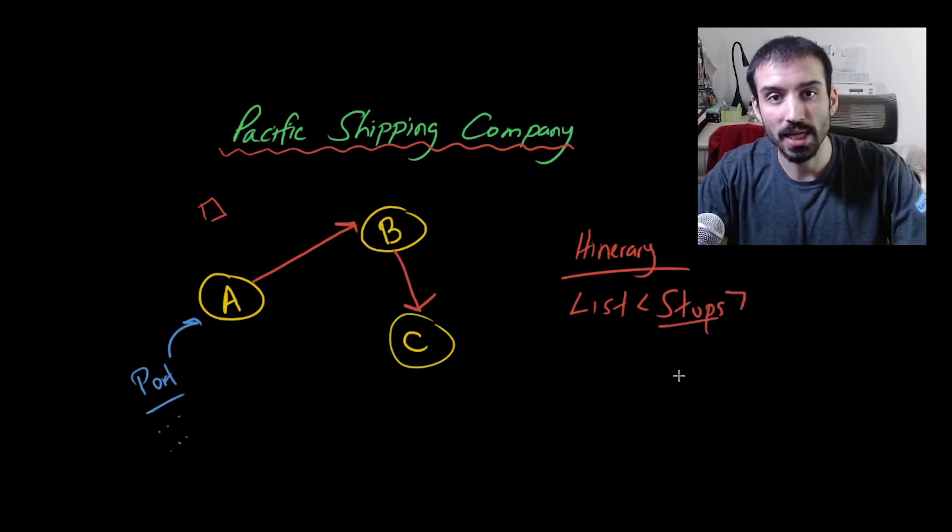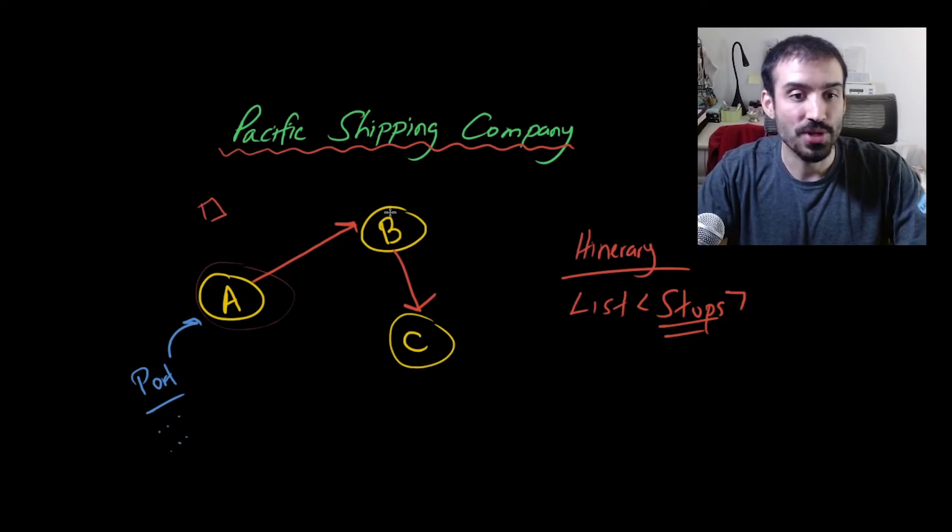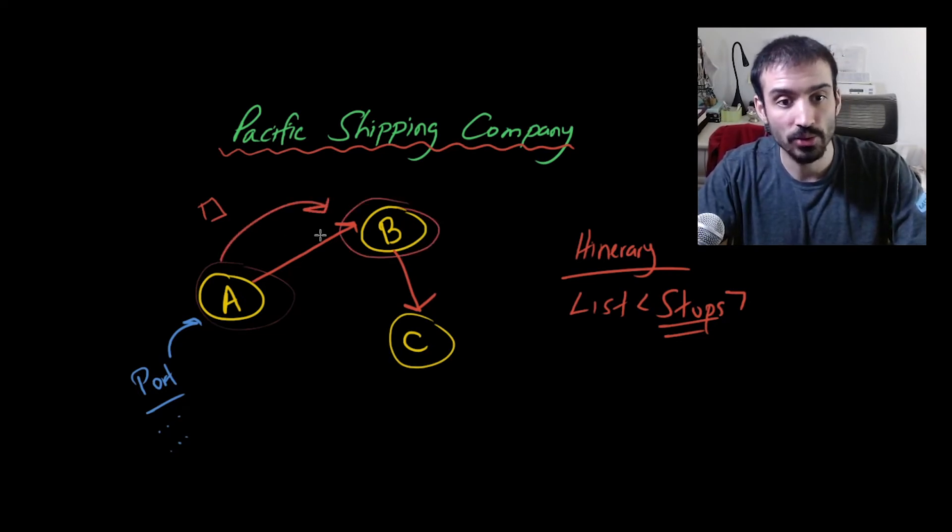And your stops contain details. And in this case, your stops may contain information on the source port. So the source port in this example would be A, and then your destination for stop one would be B. So you kind of have this unit here, which is S1. And then you go from B to C. So your source would be B and your destination would be C. So maybe this is called S2. So you have two stops here.